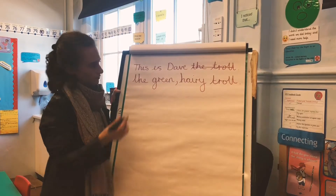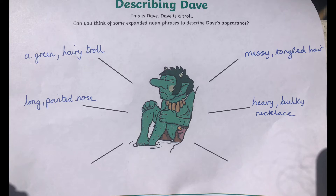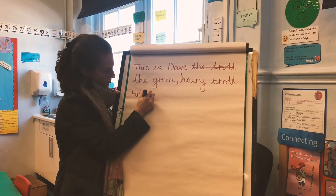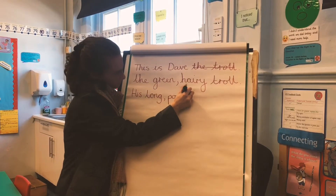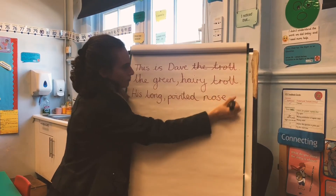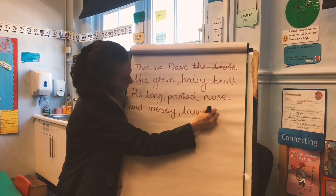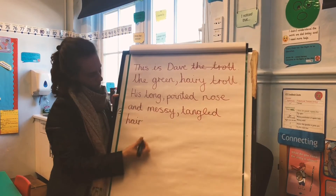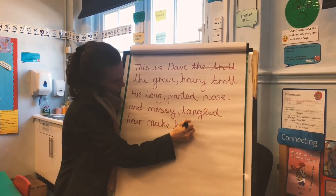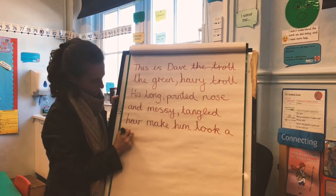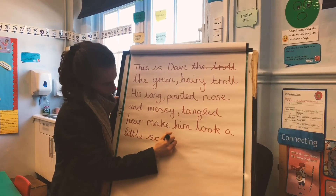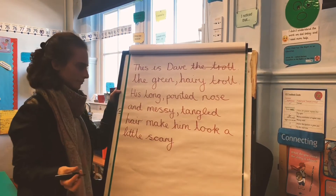Now I'm going to refer back to my sheet and I'm going to choose 'long pointed nose' and 'messy tangled hair' as my expanded noun phrases. His long pointed nose and messy tangled hair make him look a little scary.